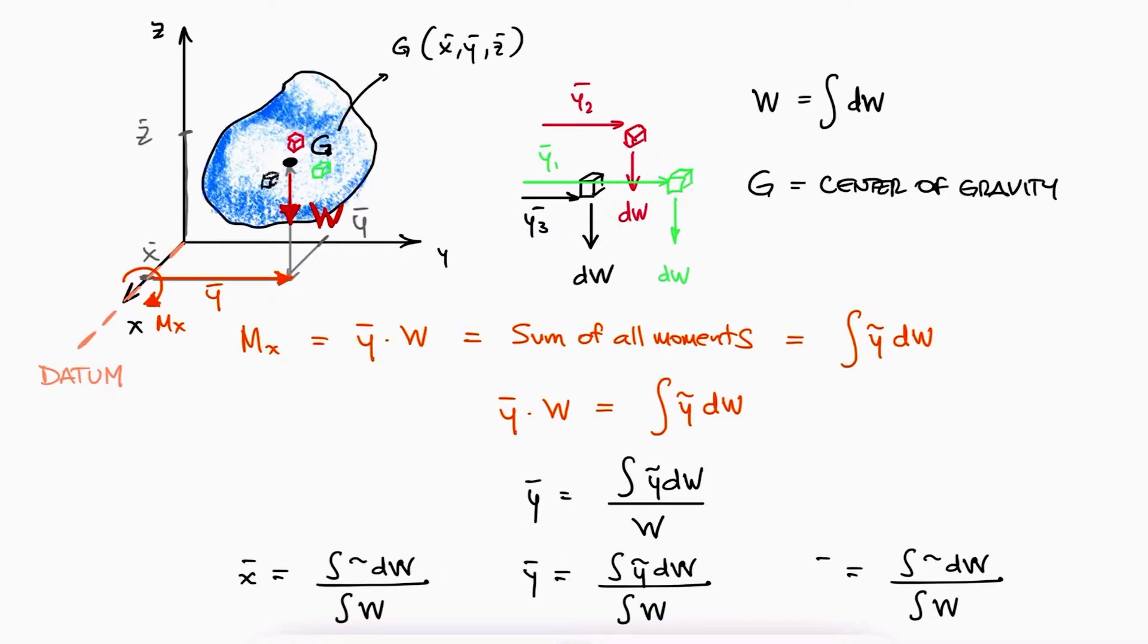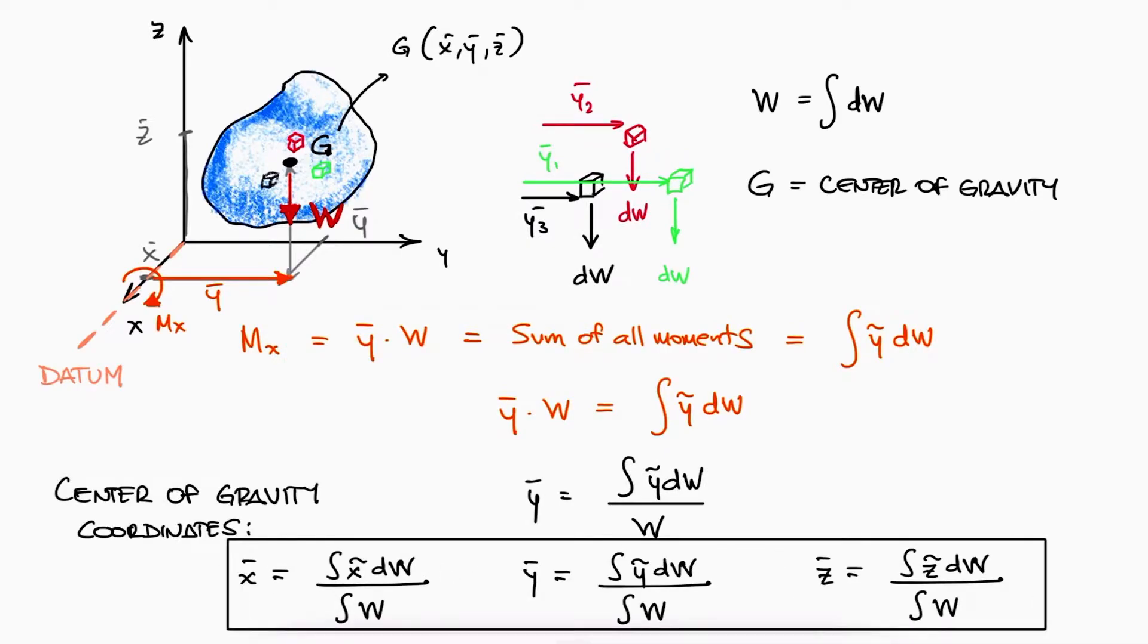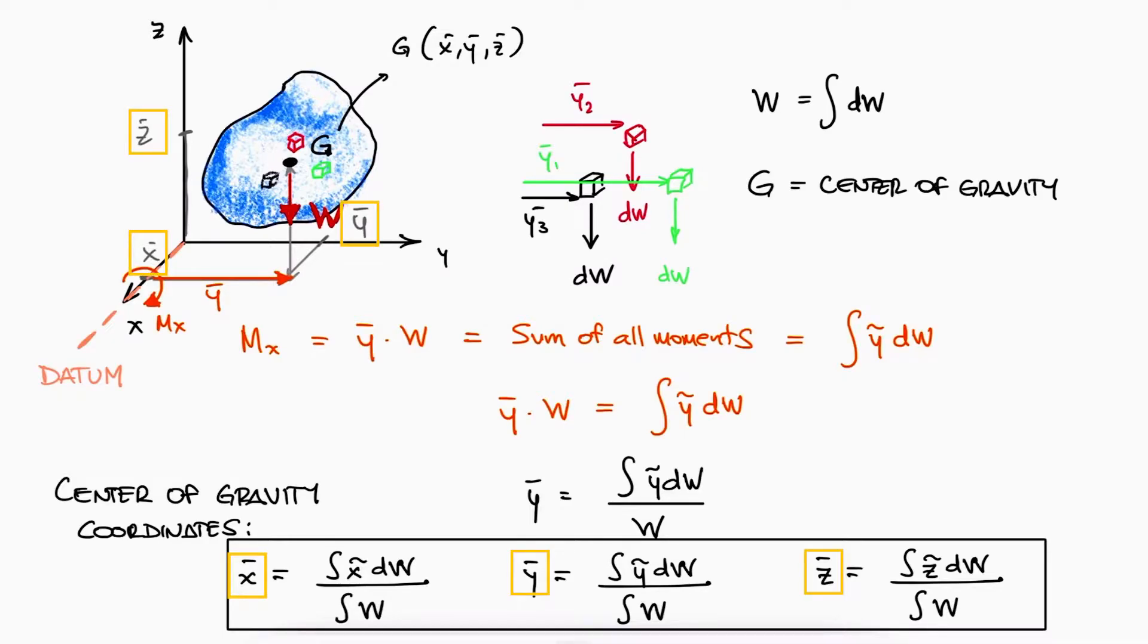And this is true for any direction, x, y, or z. The location of the center of gravity would therefore be given in three dimensions by the coordinates x bar, y bar, and z bar.